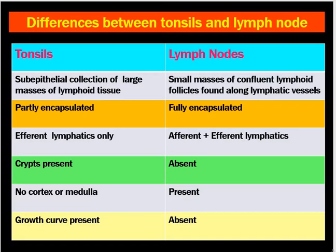Tonsils have efferent lymphatics only, draining to the jugulodigastric lymph nodes, whereas lymph nodes have both afferent and efferent lymphatics. Tonsils contain crypts — one crypta magna (major crypt) and around 15–16 minor crypts — whereas lymph nodes have no crypts. Tonsils do not contain a cortex and medulla, but lymph nodes do. Tonsils usually enlarge until 10 years of age, then stop growing and may occasionally decrease in size.